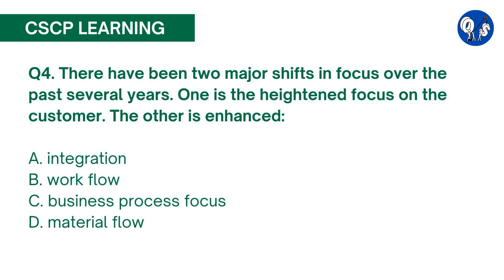Question number 4. There have been two major shifts in focus over the past several years. One is the heightened focus on the customer; the other is enhanced: A. Integration, B. Workflow, C. Business Process Focus, D. Material Flow. The correct answer is A. Organizations have become more integrated both internally and externally. Tools now exist to work across functions to improve business process. This improved integration also reaches the external supply chain so suppliers can be as integrated as the internal functions.